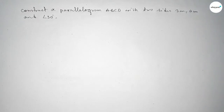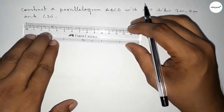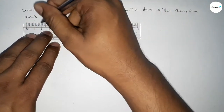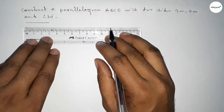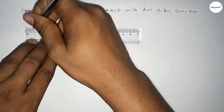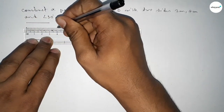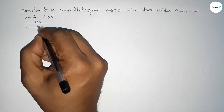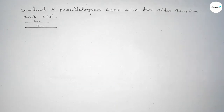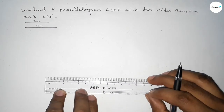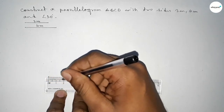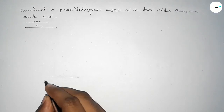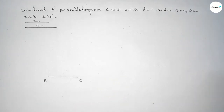Let's start the video. First of all, we have to draw a line of length 3 centimeters, then draw another line of length 4 centimeters. So this one is 3 centimeters and this one is 4 centimeters. Again, we draw a line of length 4 centimeters, taking point B here and point C here.